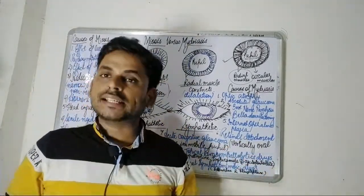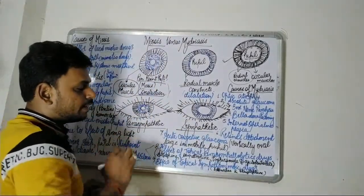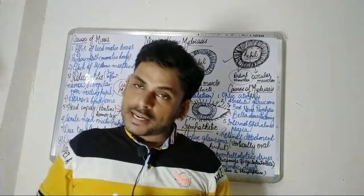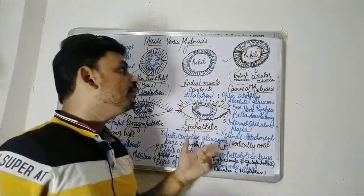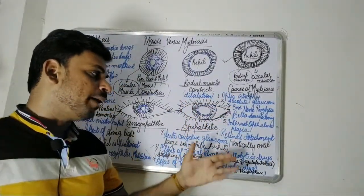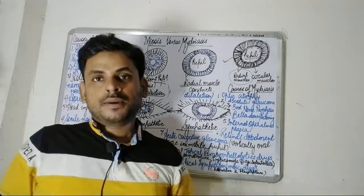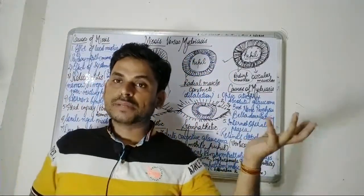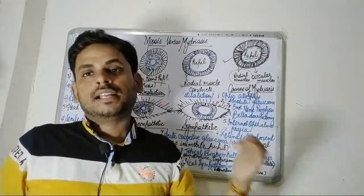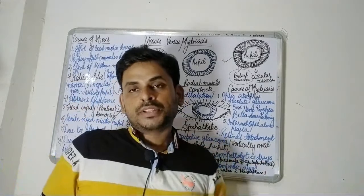Last but not least, certain drugs and chemicals are responsible for mydriasis. These can be broadly subdivided into: topical parasympatholytic drugs such as atropine, homatropine, tropicamide, and cyclopentolate; and topical sympathomimetic drugs, since mydriasis resembles sympathetic activity, such as adrenaline and phenylephrine.